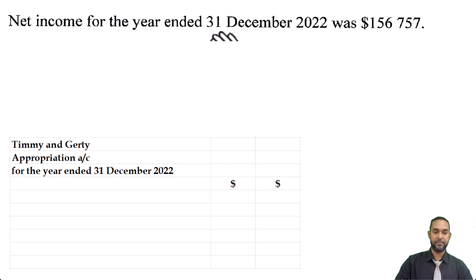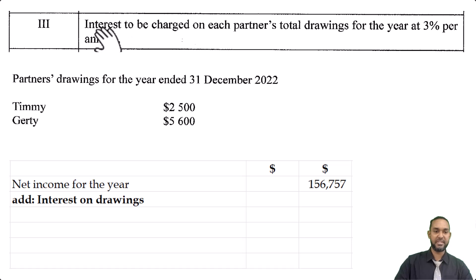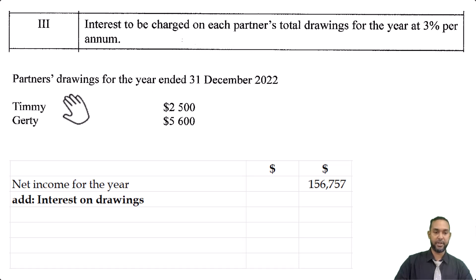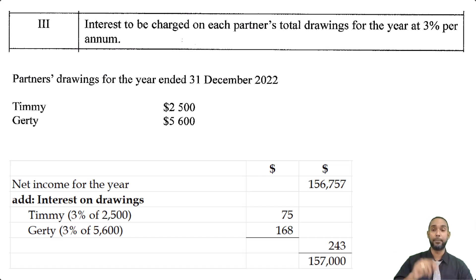We start off with our net income for the year ended 31 December 2022, which is $156,757, and to which we add the interest on drawings. Item 3 says interest is to be charged on each partner's total drawings for the year at 3% per annum. Timmy had $2,500, Goethe had $5,600. So we multiply 3% by each of those, get the individual figures, add them together, and add that to the net income. That will be the profit that we are now going to appropriate.